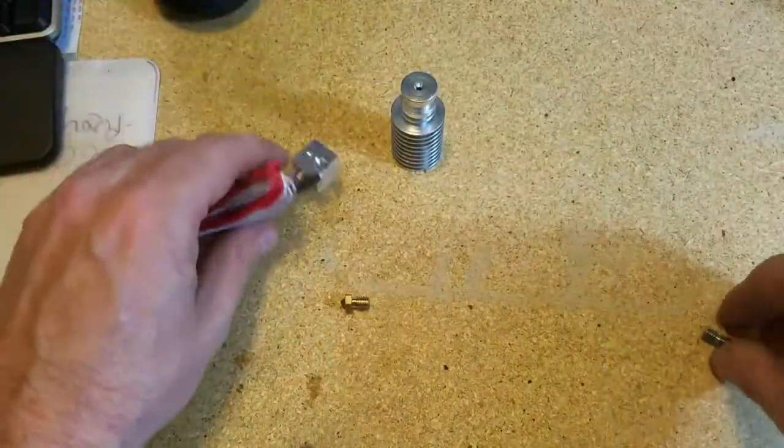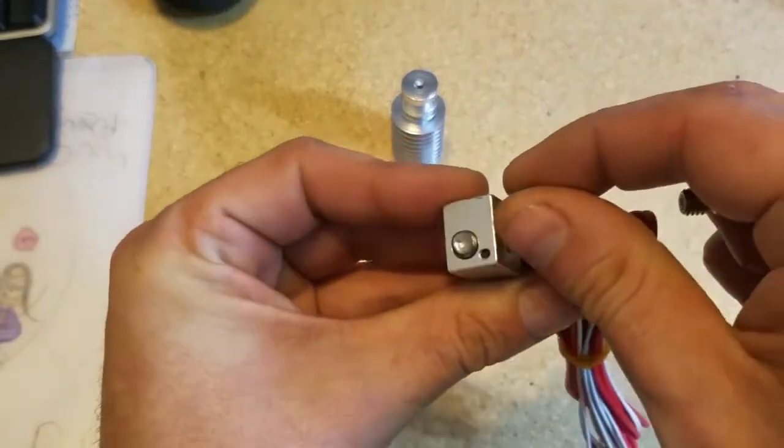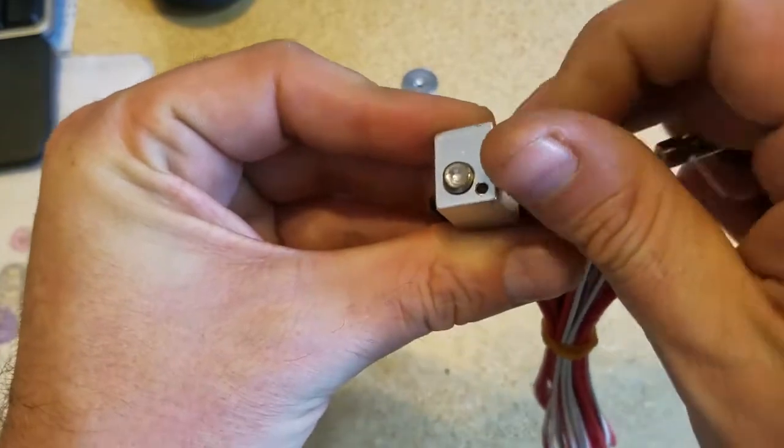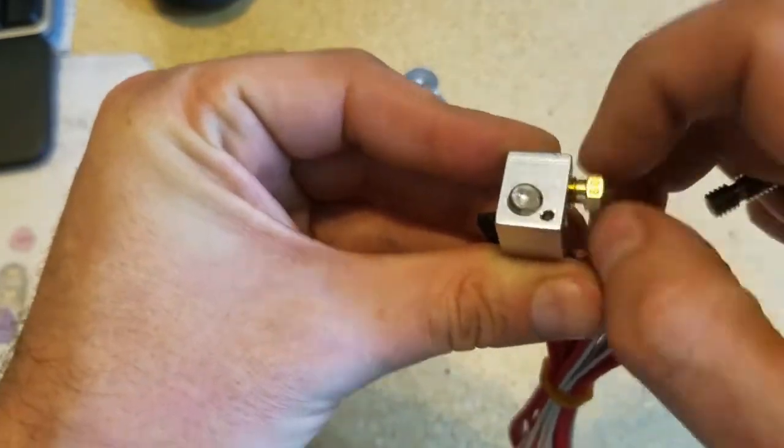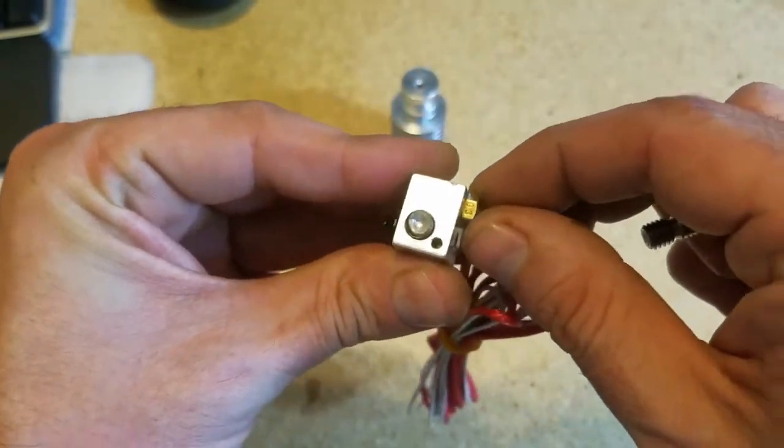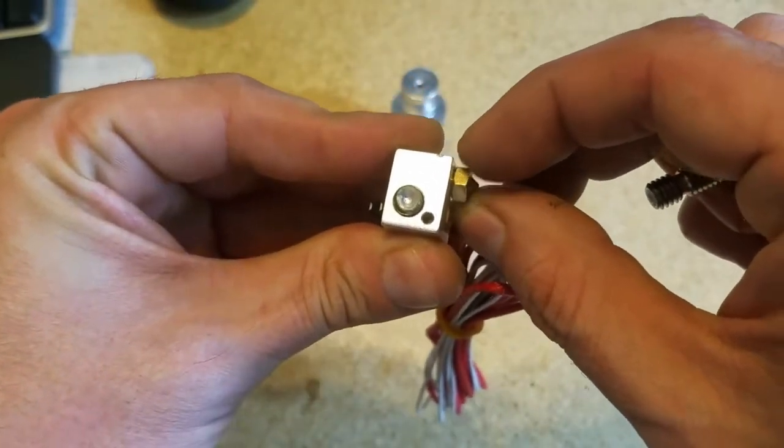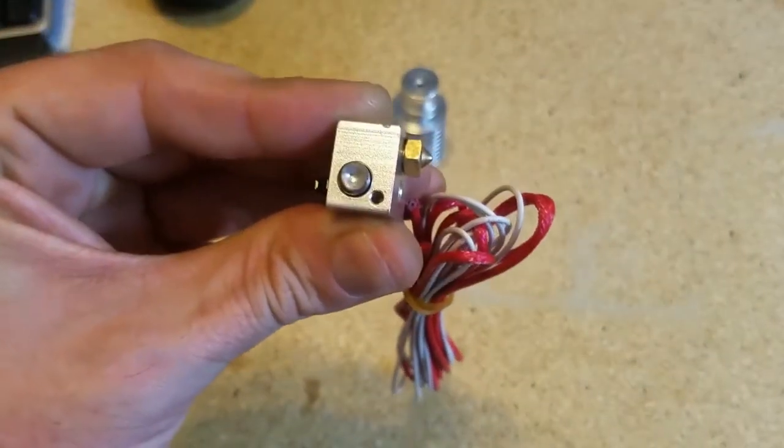Once it's clean, what you want to do to put it back together: put your nozzle all the way to the block, all the way to the block. Once it's all the way to the block, you want to retract it about a half turn. You can see it's about a tenth of a millimeter what's left in there.